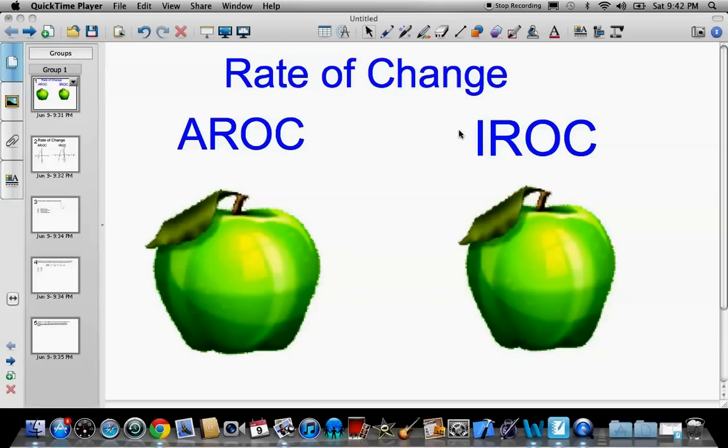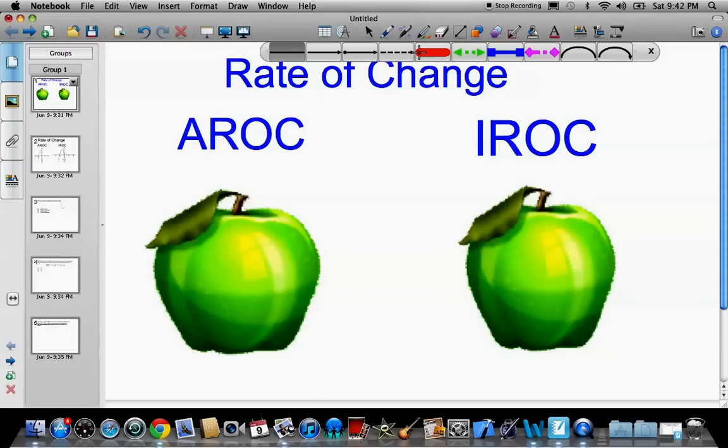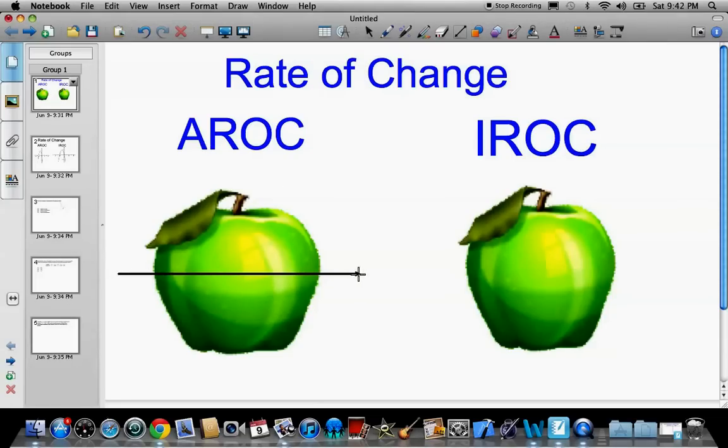I use this example in class to differentiate between instantaneous rate of change and average rate of change. The idea behind that, I like to think of an apple. So an average rate of change is when an archer shoots an apple directly through it. So it goes right through the apple. If you notice, the arrow touches the apple at two points. So this is sort of an average rate of change. It goes through the apple at exactly two points, one here and one here.